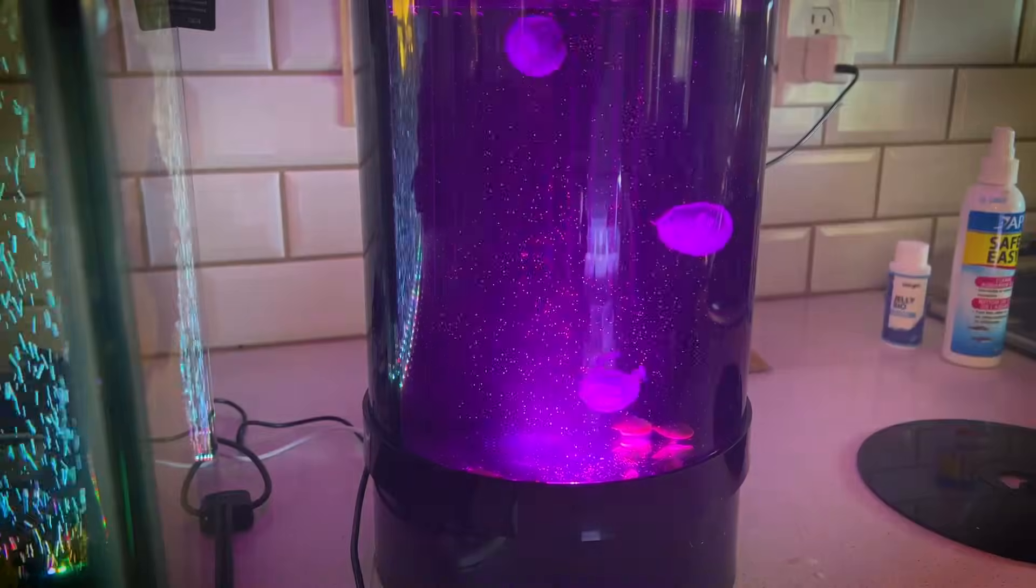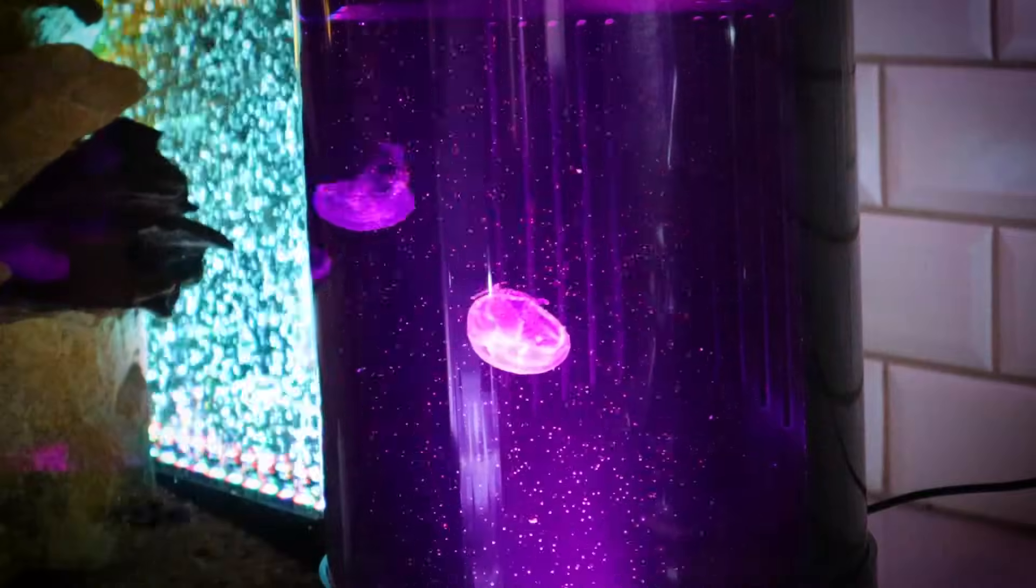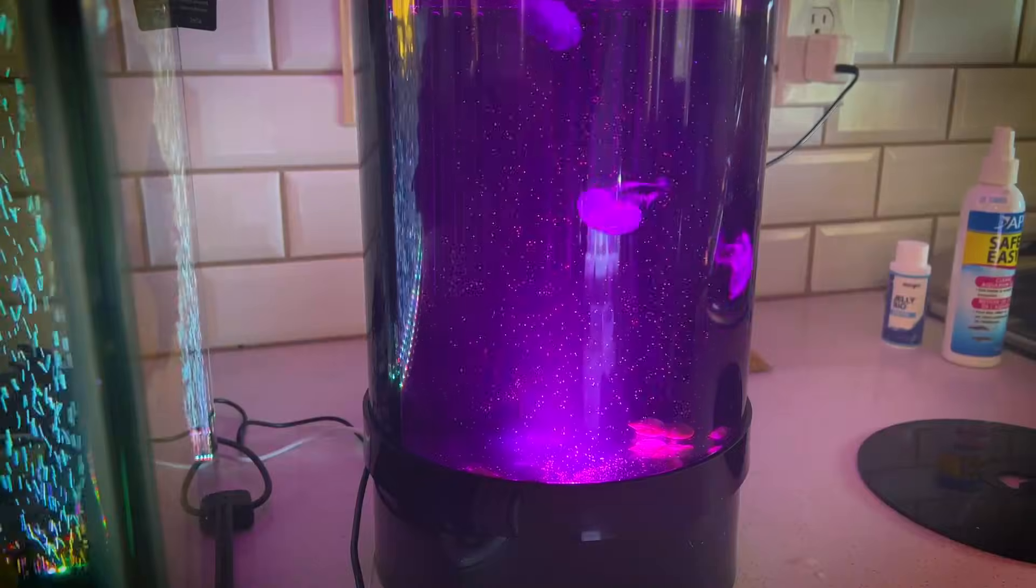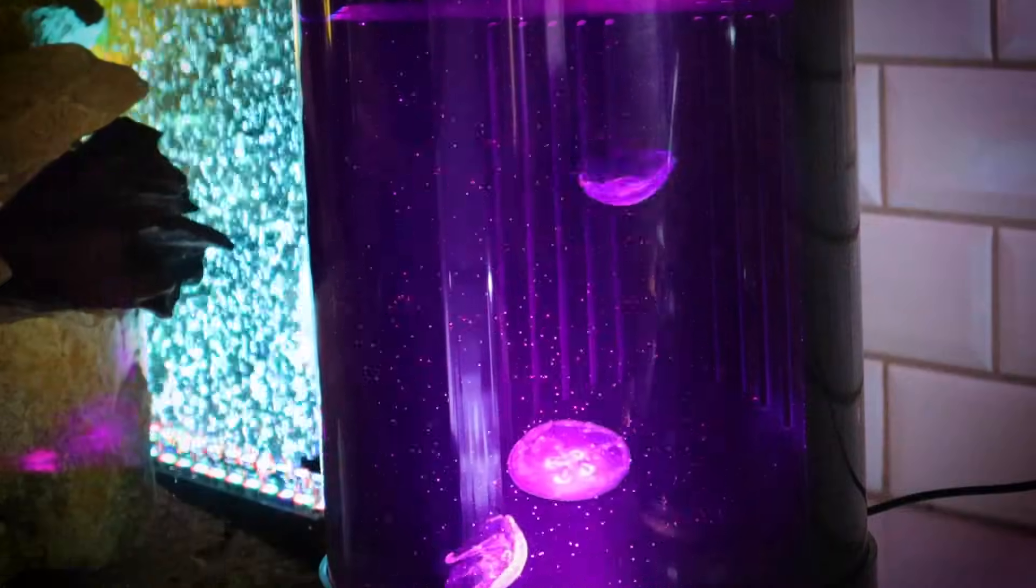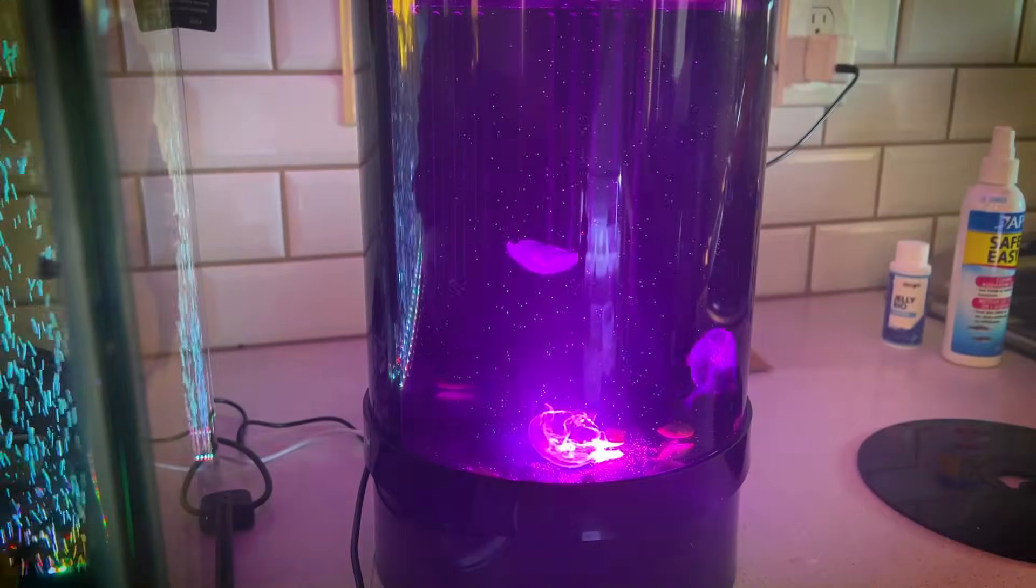Now jellyfish will actually filter all of this brine shrimp out of the water. You can slowly see it disappearing. What they do is catch it in their tentacles and then move it towards their mouth using their oral appendages, which are these legs that hang off the bottom of the jellyfish.